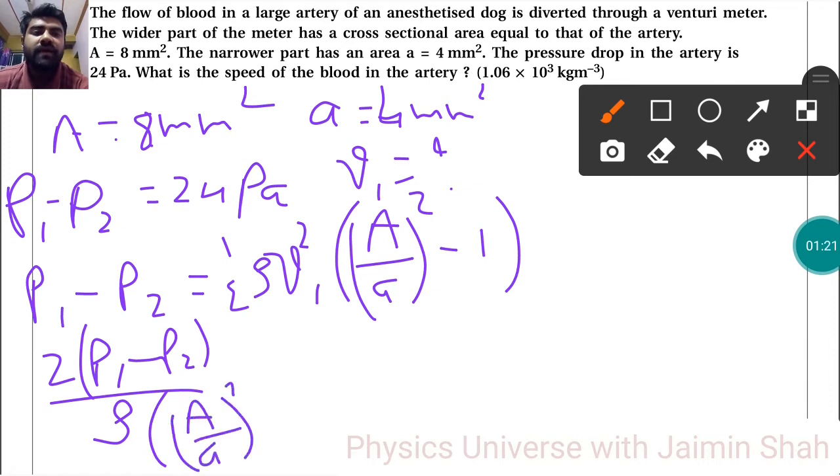Now we have capital A and small a. These are in millimeter square. So millimeter squared is 10 to the minus 3, so 10 to the minus 6 for area.